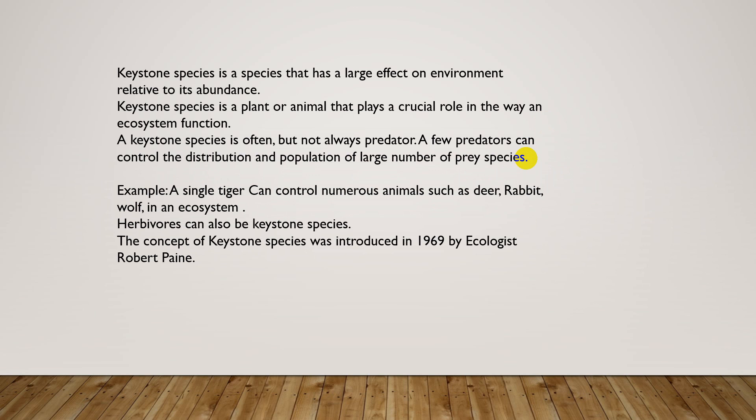A keystone species is a species that has a large effect on the environment relative to its abundance. Its presence has a large effect on the environment. For example, the presence of a lion helps in balancing the ecosystem — lions eat deer and other herbivore species as prey, which helps protect plant species from overconsumption.